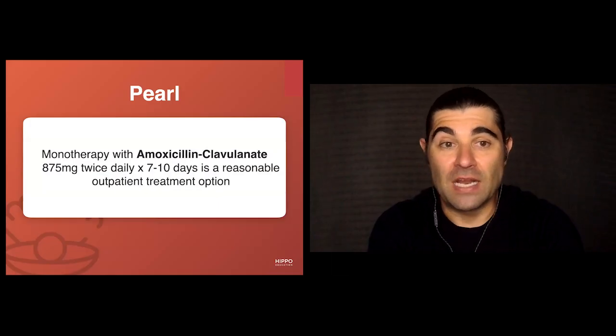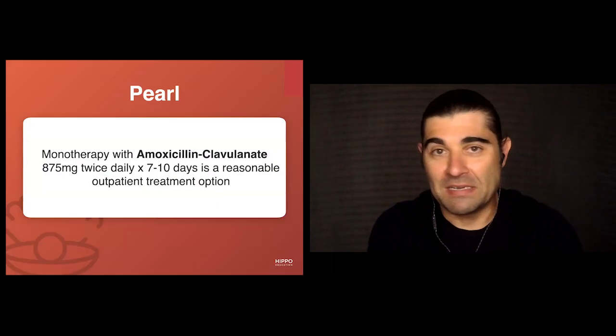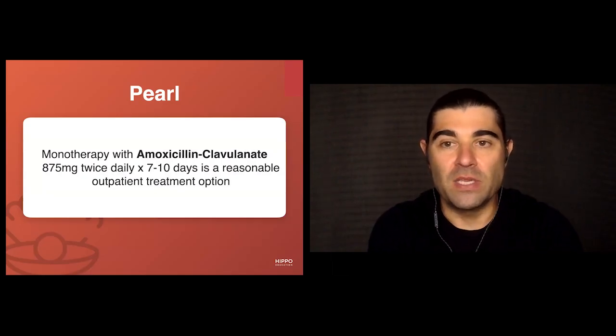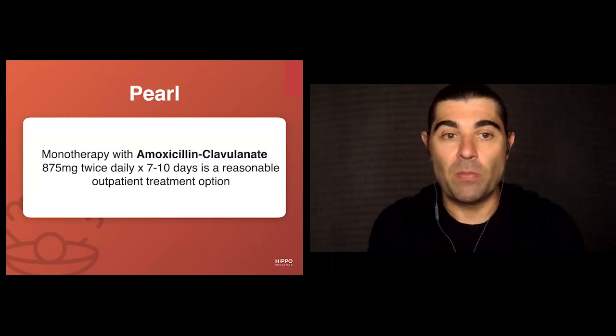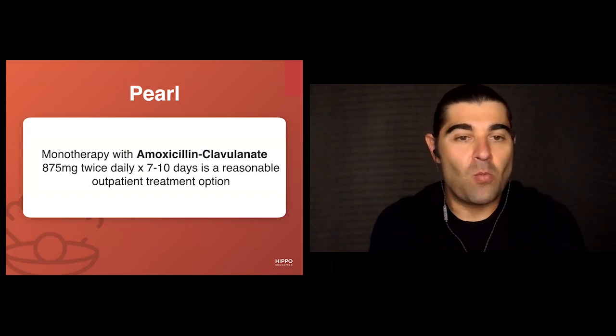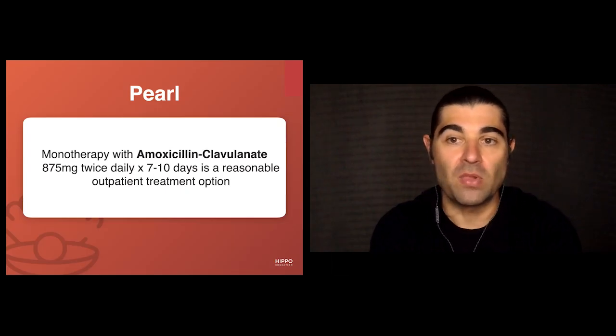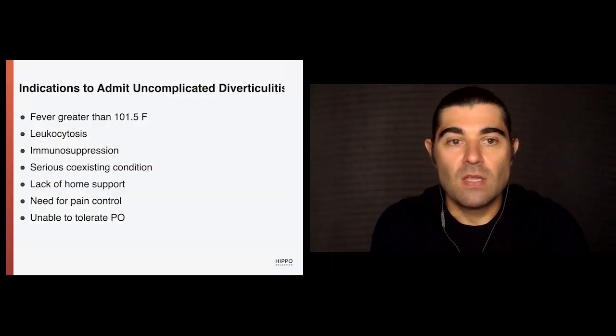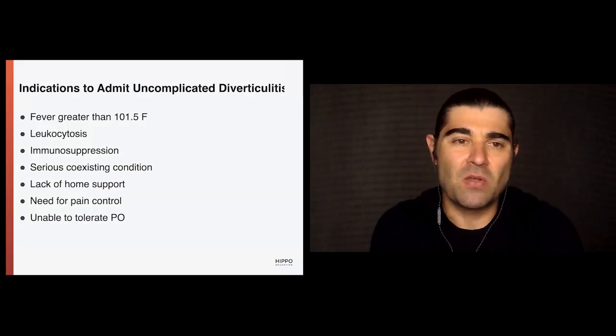Another important pearl: monotherapy with amoxicillin-clavulanate 875 milligrams twice a day for seven to ten days is a reasonable outpatient option. Typically ciprofloxacin plus metronidazole has been the go-to regimen, but amoxicillin-clavulanate monotherapy may improve patient compliance. This is particularly useful for uncomplicated patients being discharged — one antibiotic regimen with clear return precautions.